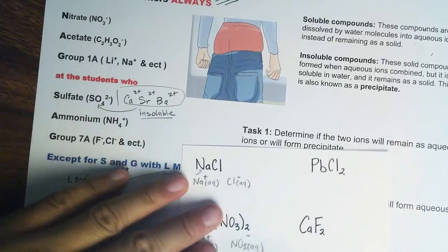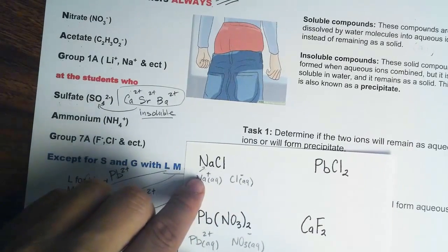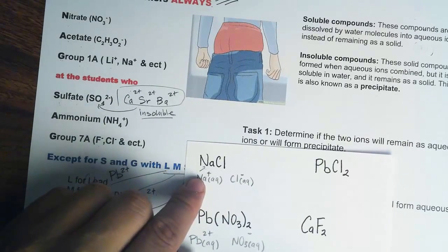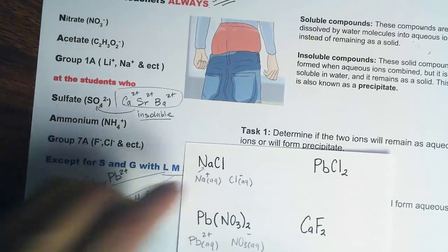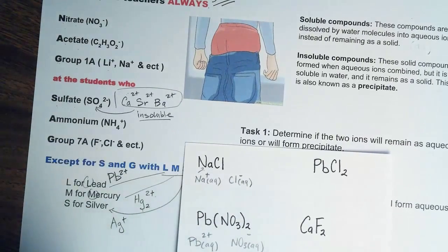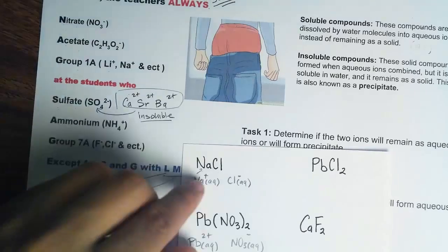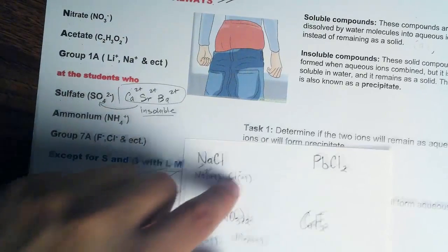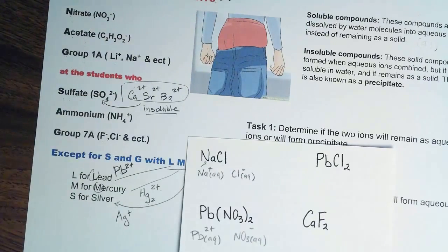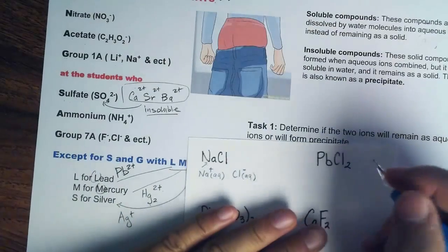Just like sodium chloride, lead nitrate will form two separate aqueous ions. If you remember when you put table salt in water — it disappeared. That tells you it is being dissolved into aqueous ions; we cannot see them because they are too small.